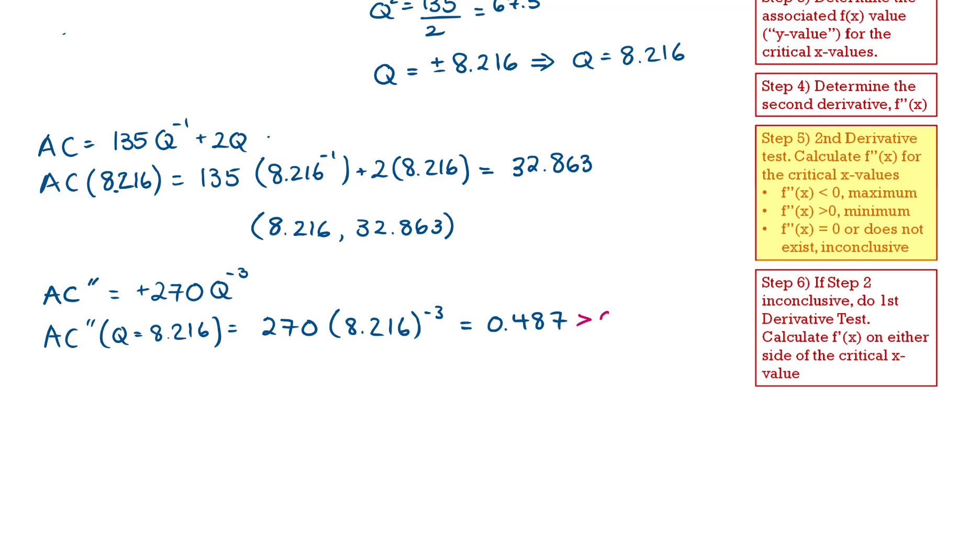Now this value is positive. So I know I'm dealing with a concave up region. Therefore, my critical point where the slope is equal to 0 is going to be a minimum. And we can also see that here. When our second derivative is positive, we're dealing with a minimum.